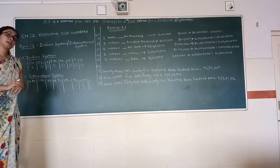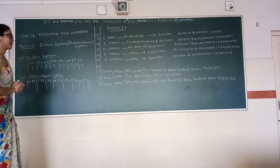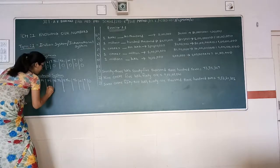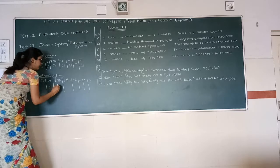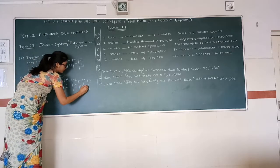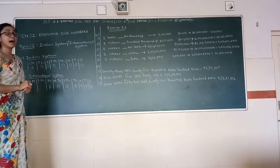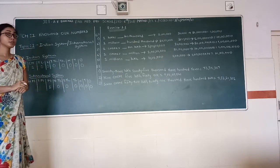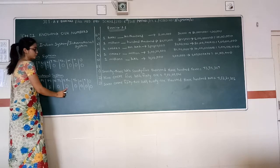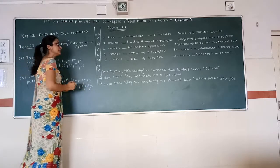Now I will give you another amount on the basis of the international system. Let me give you an amount: one million. So I will write one and then zero, zero, zero, zero, zero, zero. How many zeros do we have in one million? One, two, three, four, five and six.